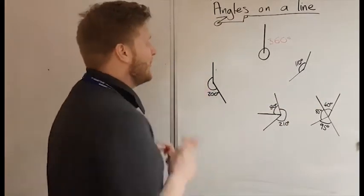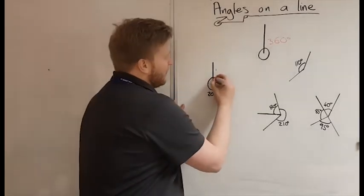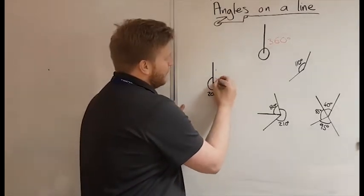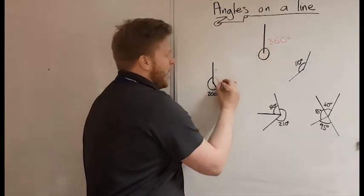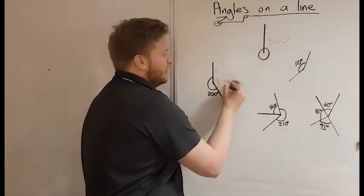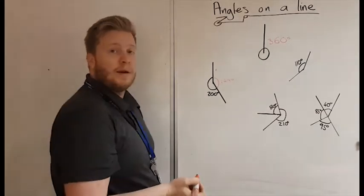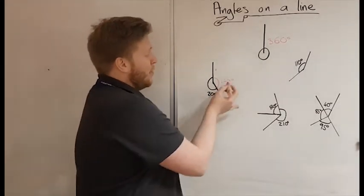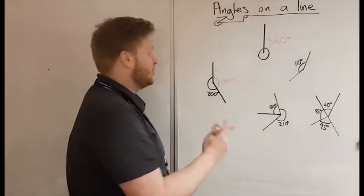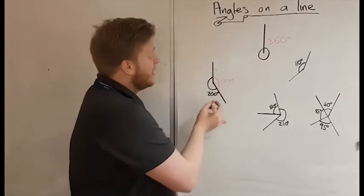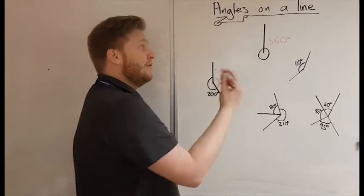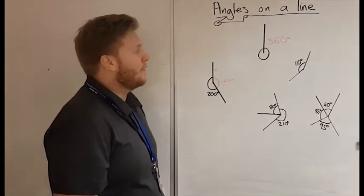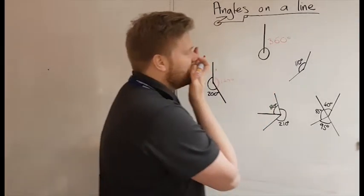So we have 200 degrees here. So to find this missing angle, we know it's 360, so we'll take 200 off from there. So this angle must be 160 degrees, because 360 take out 200 is 160. Quick double check: let's add them two together to see. 200 plus 160 - 200 plus 100 is 300, plus another 60 is 360. We know we've got that right.